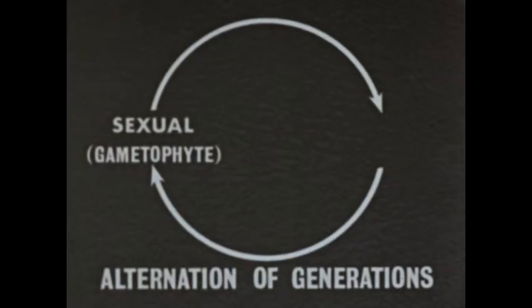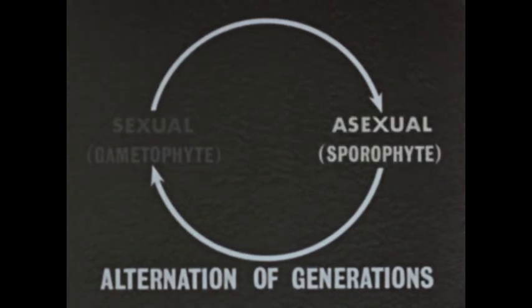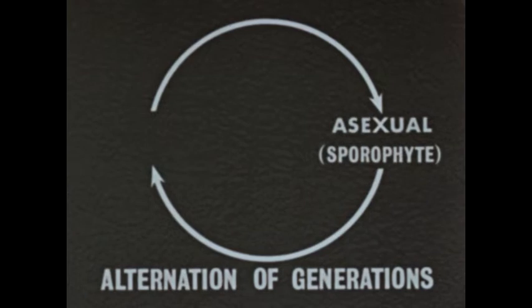A fertilized egg cell, seen here in time-lapse photography, may move about for several hours. Finally, about 50 hours after fertilization, the egg begins to develop into an embryo. The embryonic stage ends the sexual or gametophyte generation in the liverwort life cycle and begins the alternate asexual or sporophyte generation.